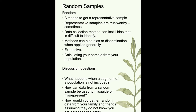Another piece about random sampling is that methods can hide bias or discrimination when applied generally. In random samples, particularly in averages, different factors within your population can be hidden. Random sampling can also be very expensive — you might hire a pollster, which can run quite a bit of money — and it can require significant time and resources to gather data.